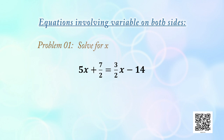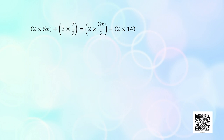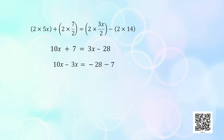Consider Problem 1: solve for x, 5x + 7/2 = (3/2)x − 14. To simplify, multiply both sides by 2. We get 10x + 7 = 3x − 28. Taking x terms on one side and constants on the other: 10x − 3x = −28 − 7, so 7x = −35. Therefore x = −5.